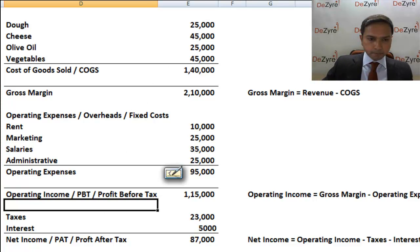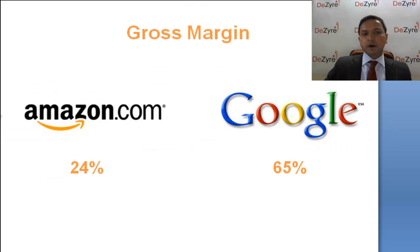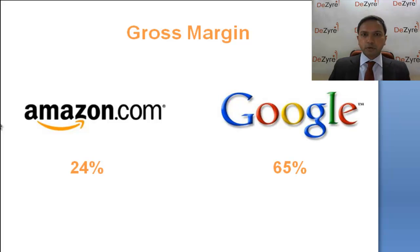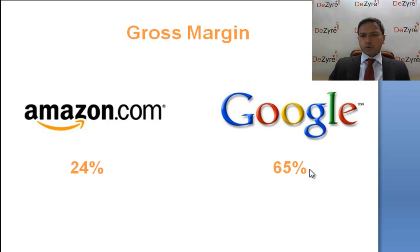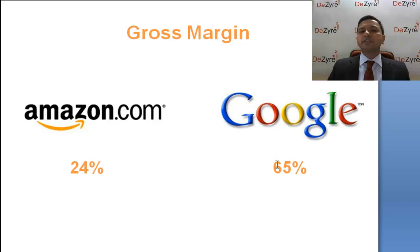To make sure you get the concept of gross margin and net margin, we're going to look at two very popular companies: Amazon.com and Google.com. Amazon's gross margin is 24 percent whereas Google's gross margin is 65 percent. Anyone not well-versed in finance might say Amazon is a terribly run company, but as a corporate finance professional, you'll know that different gross margins don't mean one company is worse than the other.